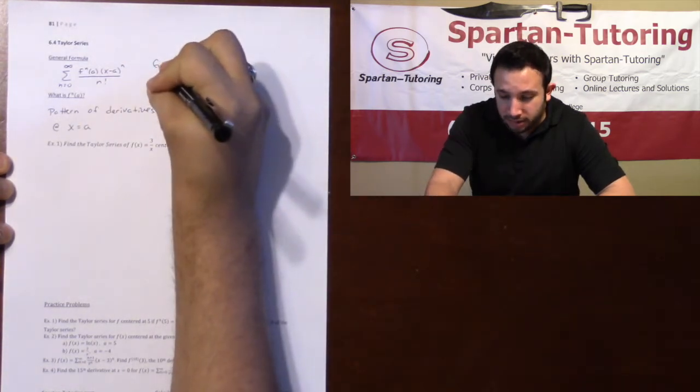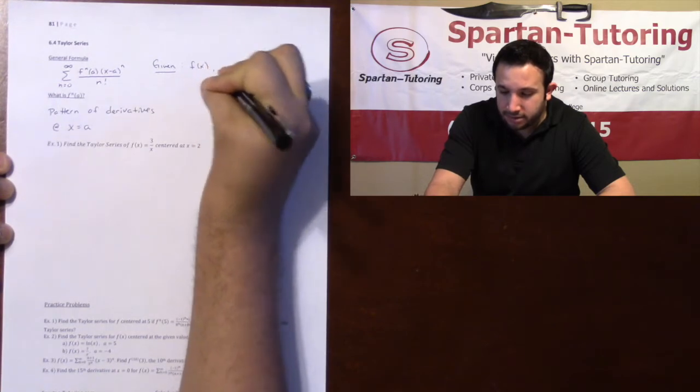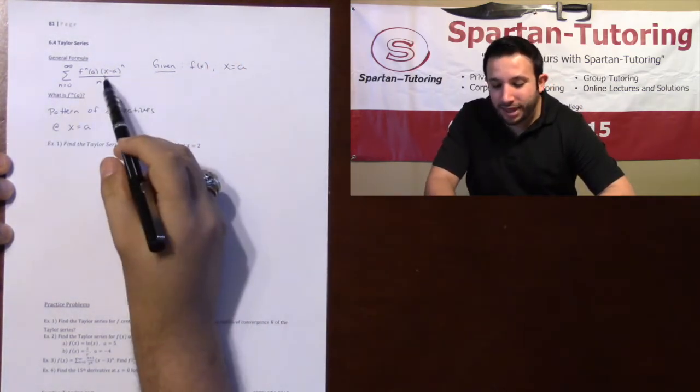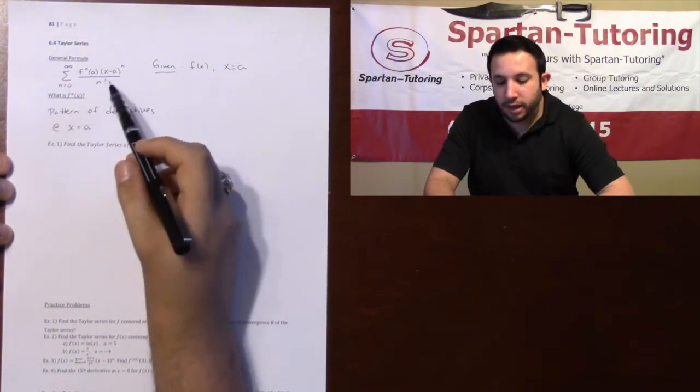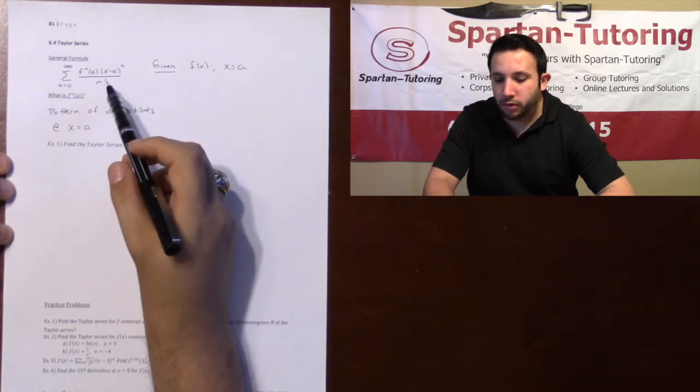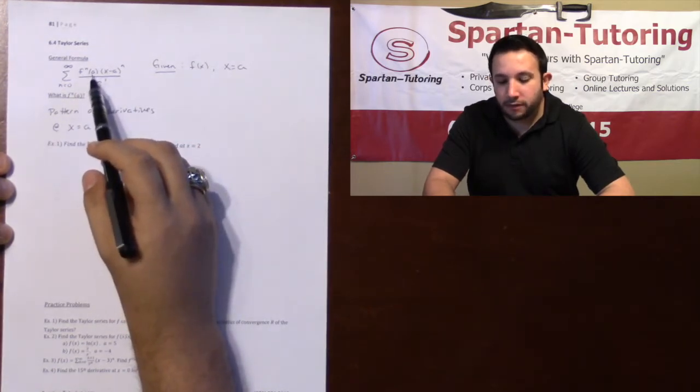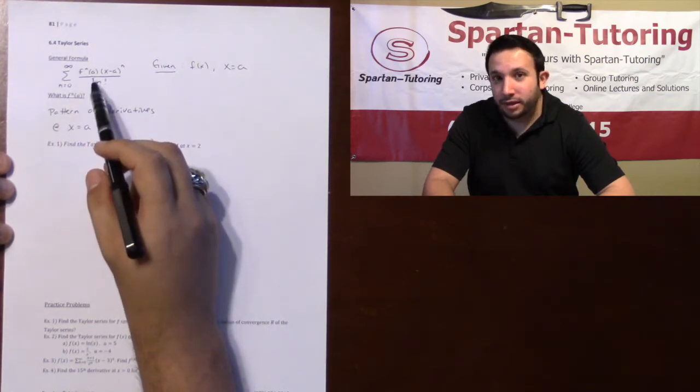And you're always going to be given some f of x centered at some x equals a. And why that's important is because x minus a to the n, let's just plug a into there. n factorial is just n factorial. There's only one thing you need to find, and that's f to the n of a. If you can find f to the n of a, we just plug it in, and you're done.